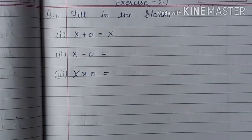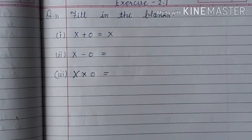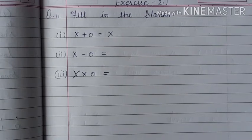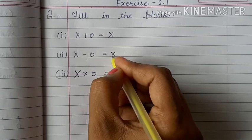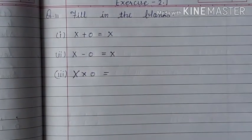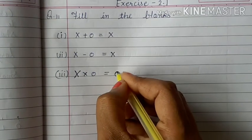You have to find x plus 0 equal x. When we add 0 with any number we get the number itself. Second is x minus 0. When we subtract 0 from any number we get the number itself. Third one is x multiply 0. When we multiply 0 with any number we get 0.